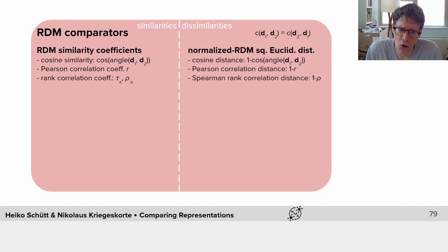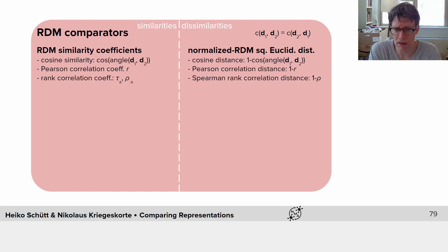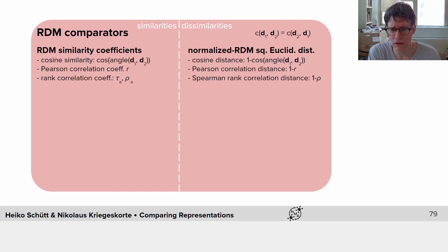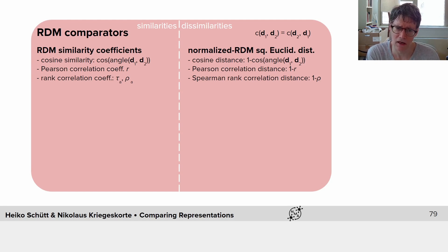It's interesting to note that these dissimilarities can be computed as the squared Euclidean distances between the RDMs after normalizing them appropriately. For the cosine similarity, we normalize the length of the vectors. For the Pearson correlation distance, we take out the mean of each RDM and then scale the values appropriately. For the Spearman rank correlation distance, we replace each dissimilarity by its rank within the matrix. Taking the squared Euclidean distance after appropriate normalization gives one minus R, one minus rho, or one minus the cosine of the angle.